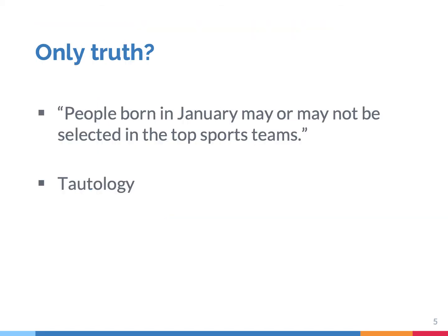If theories were only judged by their empirical success — by their truth — one would get theories that are actually useless. Consider an extreme example: suppose someone comes up with a theory that people born in January may or may not be selected in a top sports team. This idea is true, but the problem is that it's always true. It's an example of a tautology — a statement which is true and at the same time not useful at all. So what's missing here? Why is this not a good scientific theory? The missing element is information.